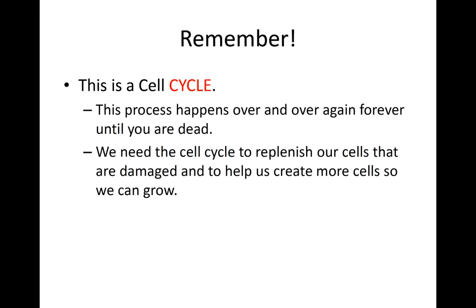So remember, the cell cycle is a process that happens over and over again. You go through interphase — G1, S, G2 — then mitosis: prophase, metaphase, anaphase, telophase, cytokinesis — and you've created two cells. Those two cells immediately go back into interphase, start growing, do their normal functions, double their DNA in S phase, prepare in G2, then divide again. We need our cell cycle to replenish our cells over time, to help us grow and to help us repair. Thanks guys, I'll see you in the next one.